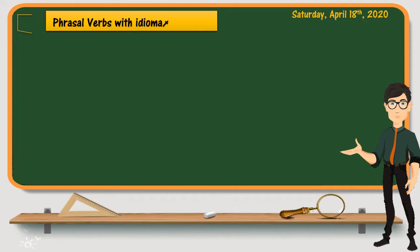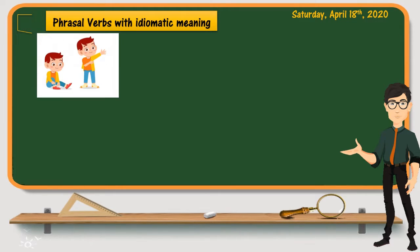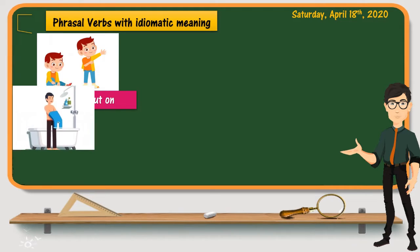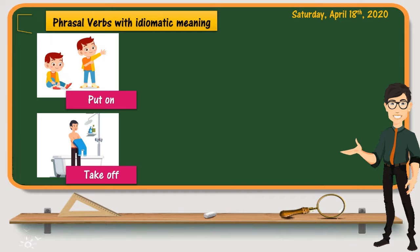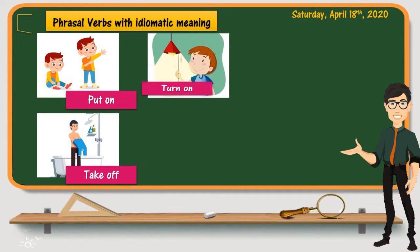However, phrasal verbs with idiomatic meaning are sometimes confusing and difficult to learn. That's why we have to study and learn them just like new vocabulary items. Here is a list of examples. The first is put on — put on clothes — which means to wear clothes. The opposite is take off — take off clothes — meaning to remove clothes.